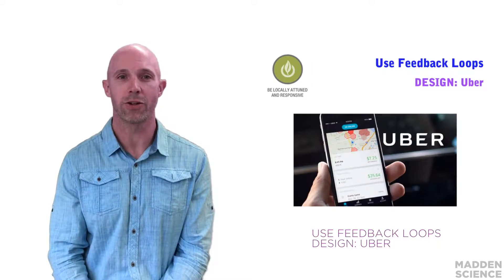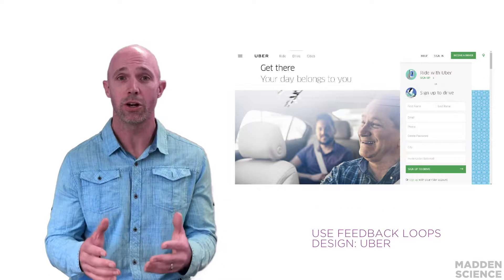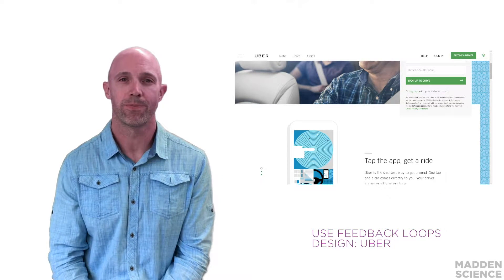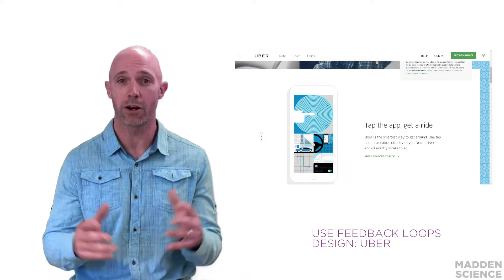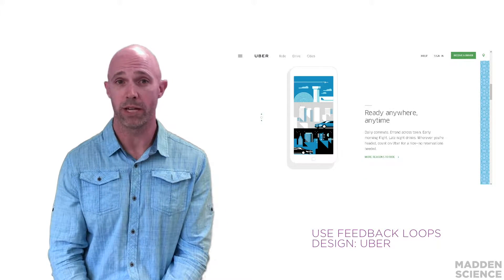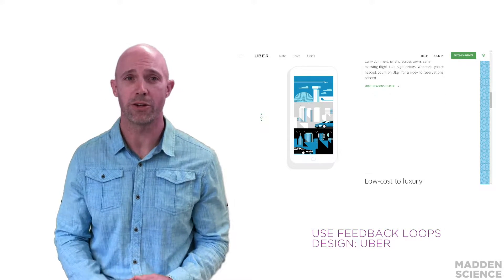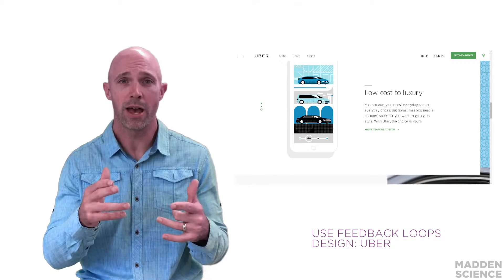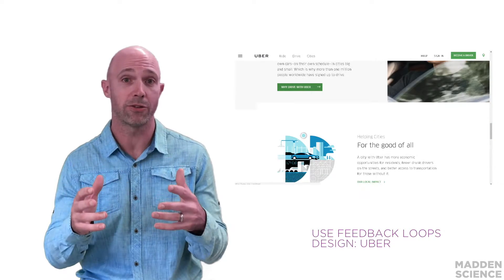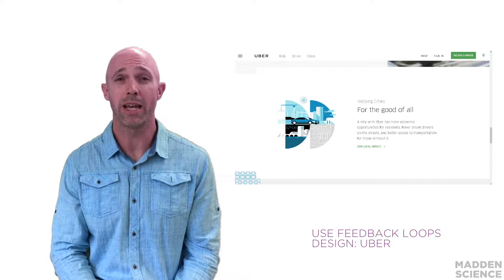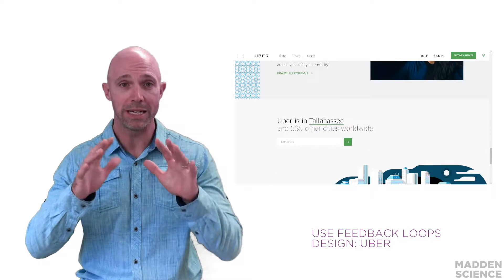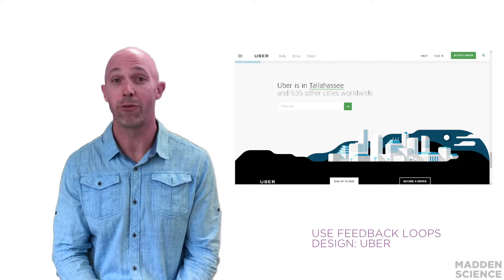Uber, the multinational online transportation company, is a current design example of the life's principle: use feedback loops. Uber is a transportation juggernaut that serves as an alternative to taxis, often at lower prices with more convenience. Uber takes customer feedback seriously, as passengers and drivers rate each other after each ride. This data can influence which drivers are chosen and which passengers are picked up — an innovative and important use of feedback loops. However, these loops go even deeper, as explained by Freakonomics.